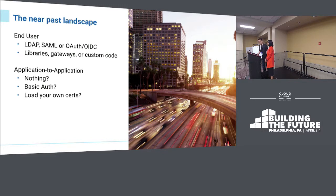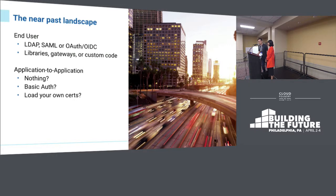What about application identity — when two applications talking to each other need to signal who they are? The most common approach done in the past was nothing. Some people might check that security box and implement basic auth between those two applications. And if you're really brave, you could add certs and have them do mutual TLS to each other, but that can introduce a lot of overhead and become a management nightmare.